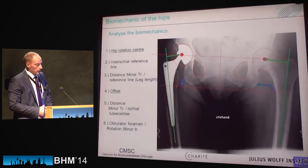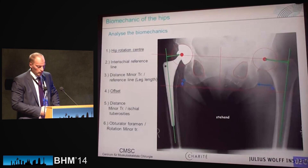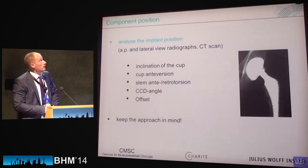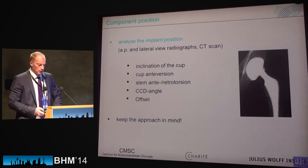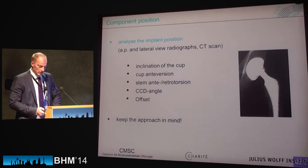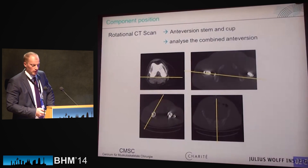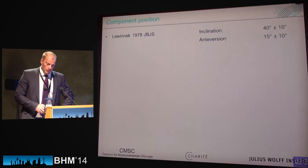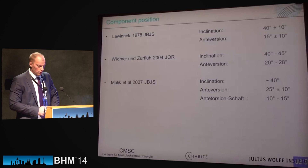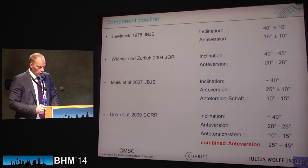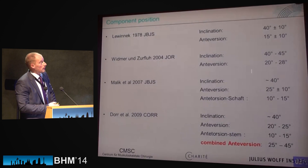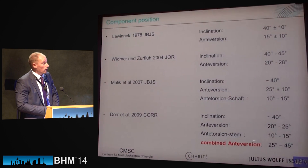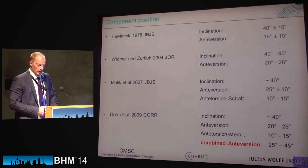All these parameters have to be considered and documented. Component alignment also requires assessment of anteversion from the cup and the stem, beside inclination, CCD, and offset. A rotational CT scan is necessary to analyze the combined anteversion. We know these recommendations from the literature beginning from 1978 to current publications, and we always have to consider the combination of stem and cup anteversion.